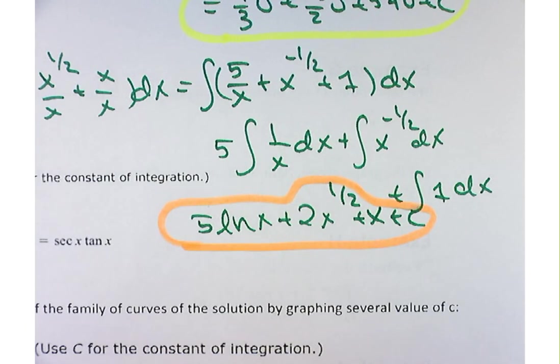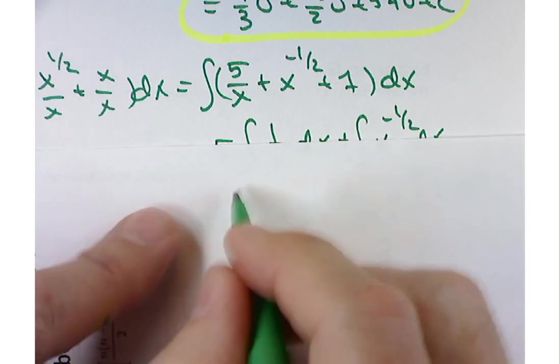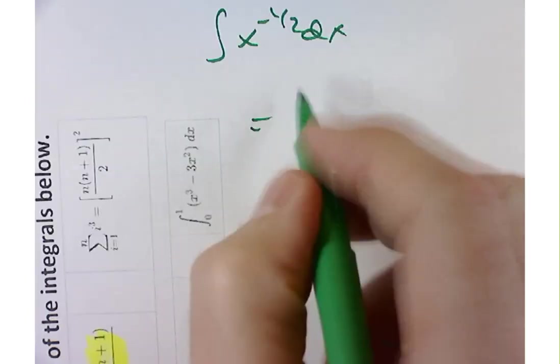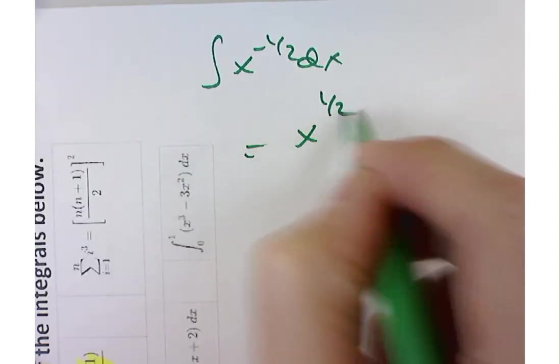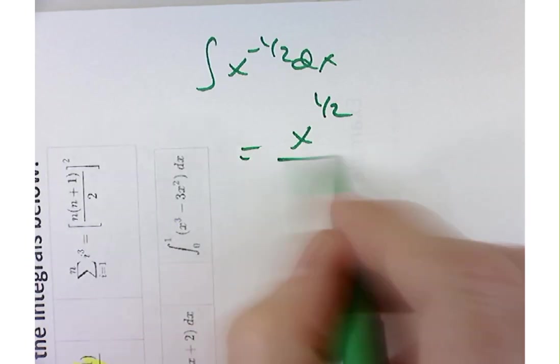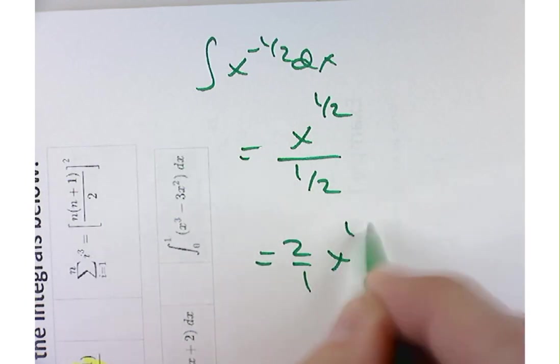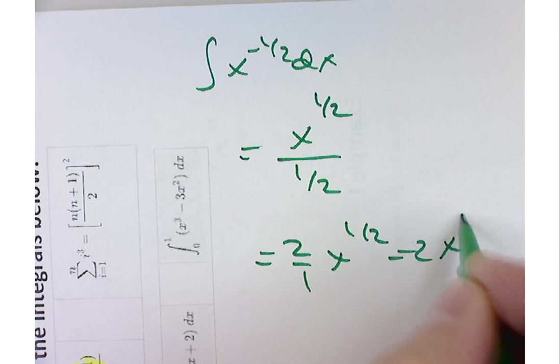So how did you get 2x? Sure. So when you integrate x to the negative 1 half, what happens? You add 1 to the exponent. You get x to the positive 1 half divided by 1 half, right? And then dividing by a fraction is multiplying by the reciprocal. So that's where you got the 2 in front there from. Thank you.